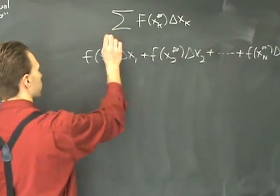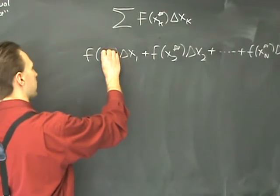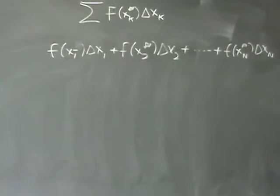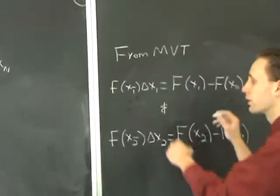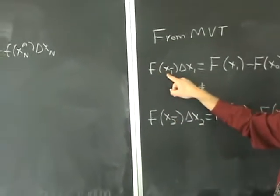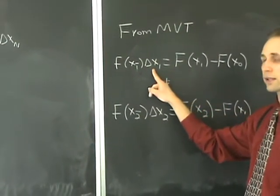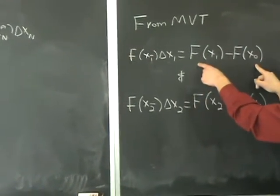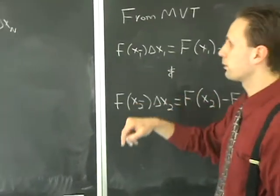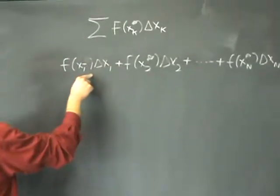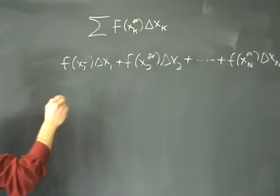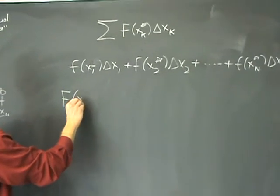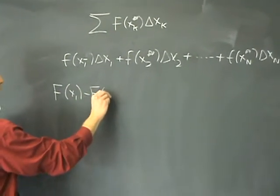And so instead of x1 star, I'm going to choose it to be x1 bar, which was the value guaranteed to exist inside that first subinterval by the mean value theorem. If we do that, then f of x1 bar times delta x1 can be traded in for the anti-derivative of f evaluated at the endpoints of the interval. So I'm going to go ahead and do that. By the appropriate choice of x1 star, I choose it to be that special number from the mean value theorem, I can actually rewrite it as F of x1 minus big F of x0.